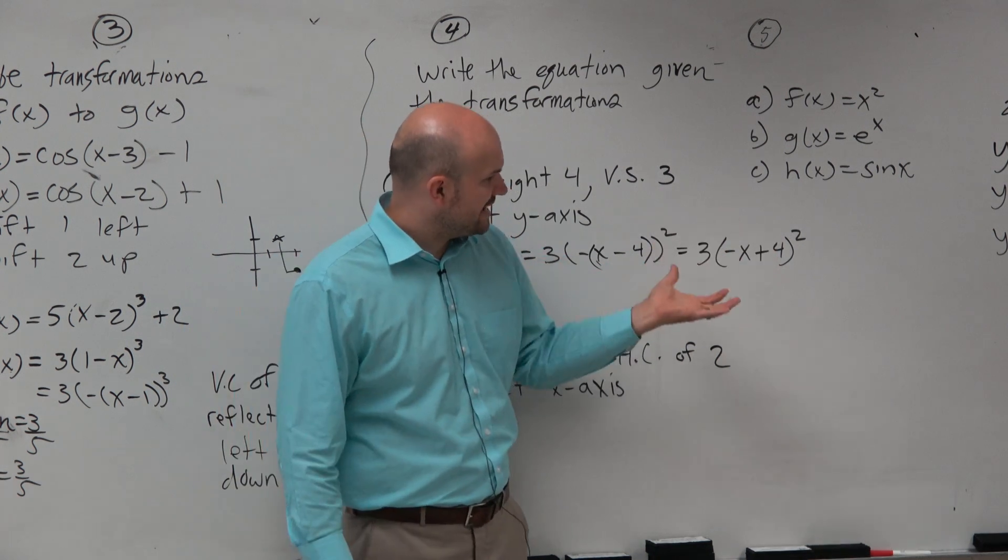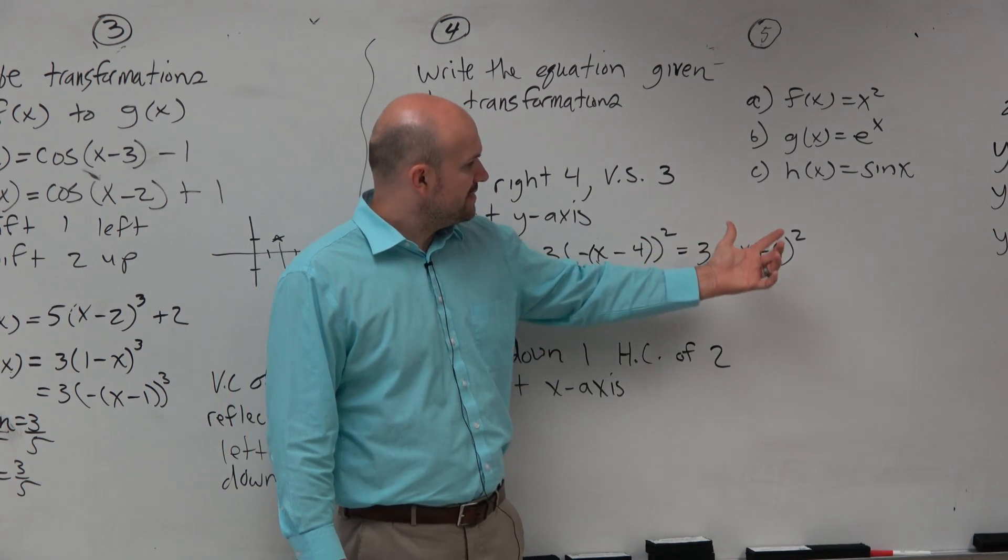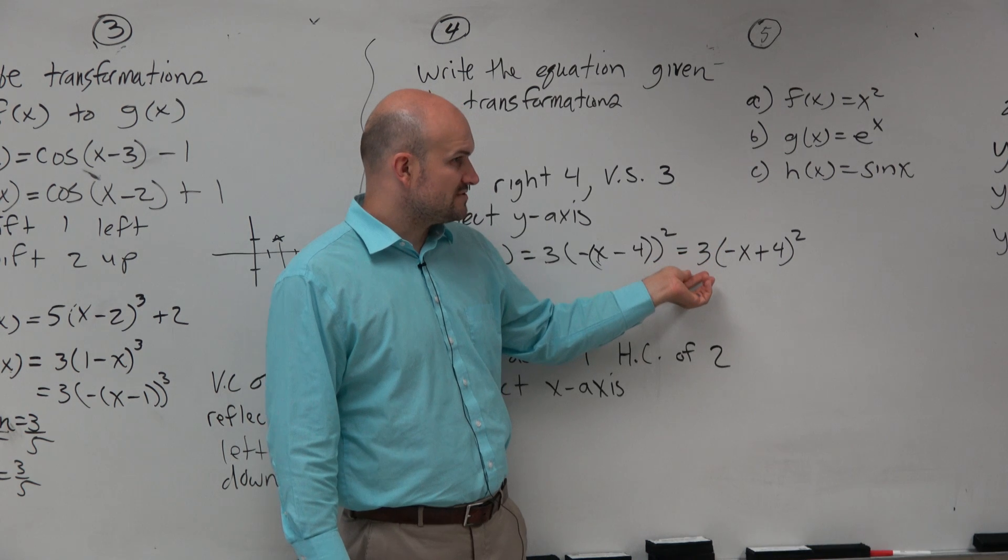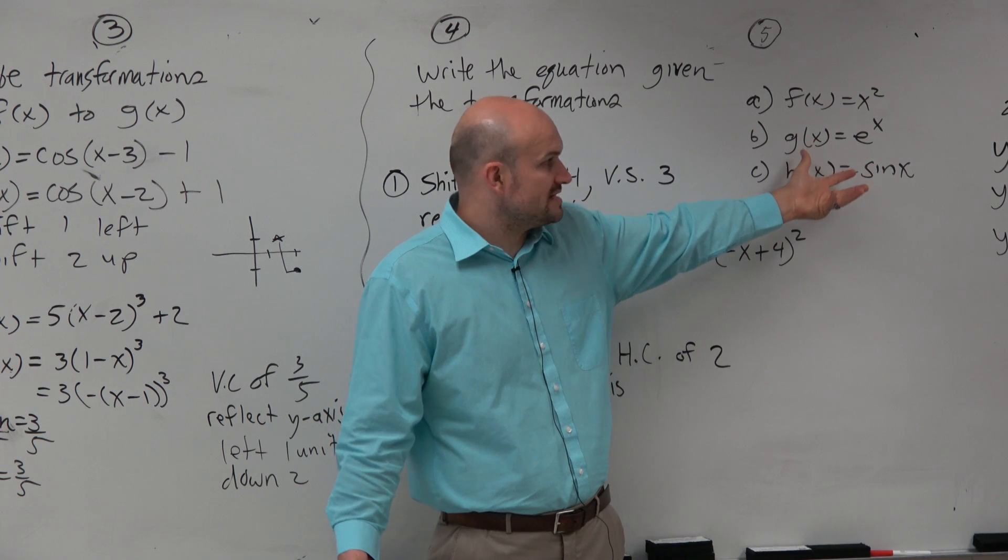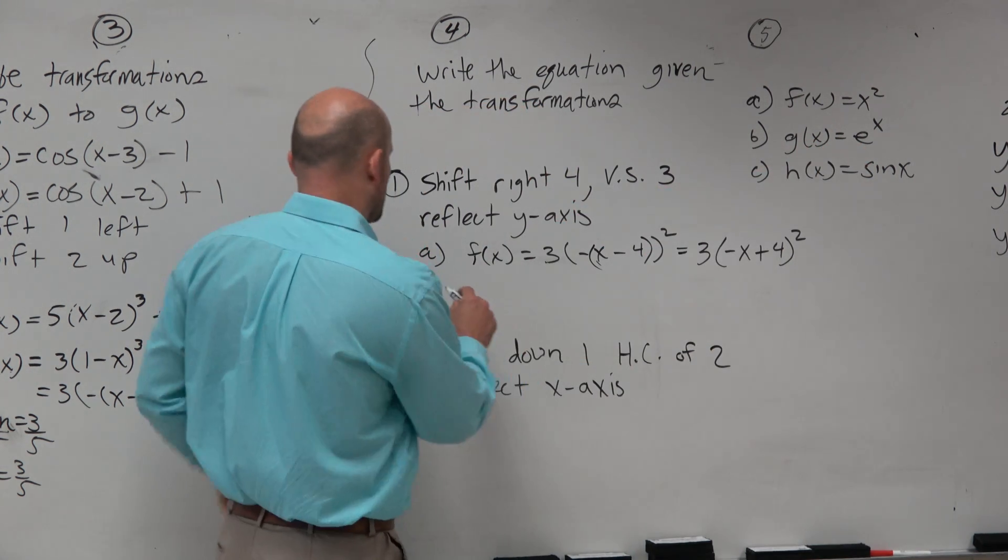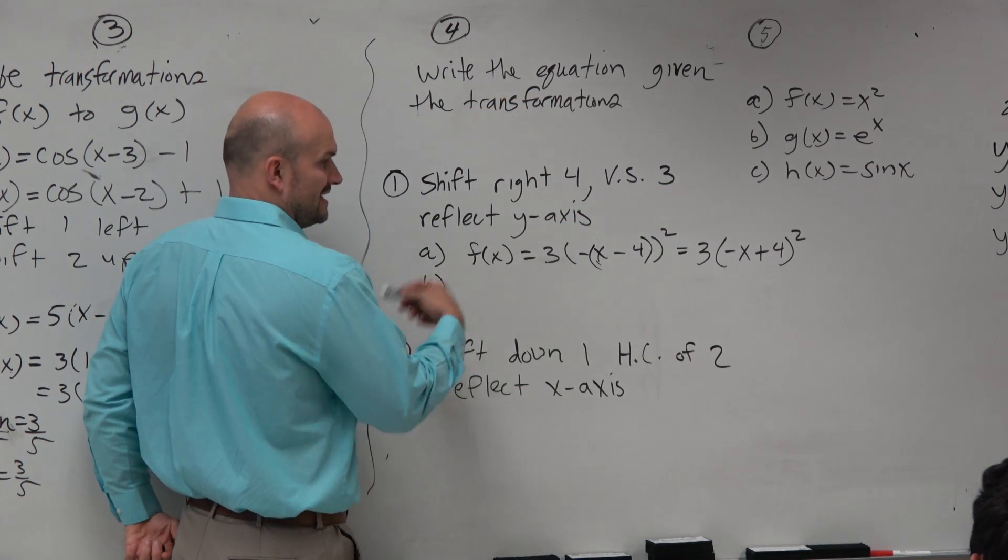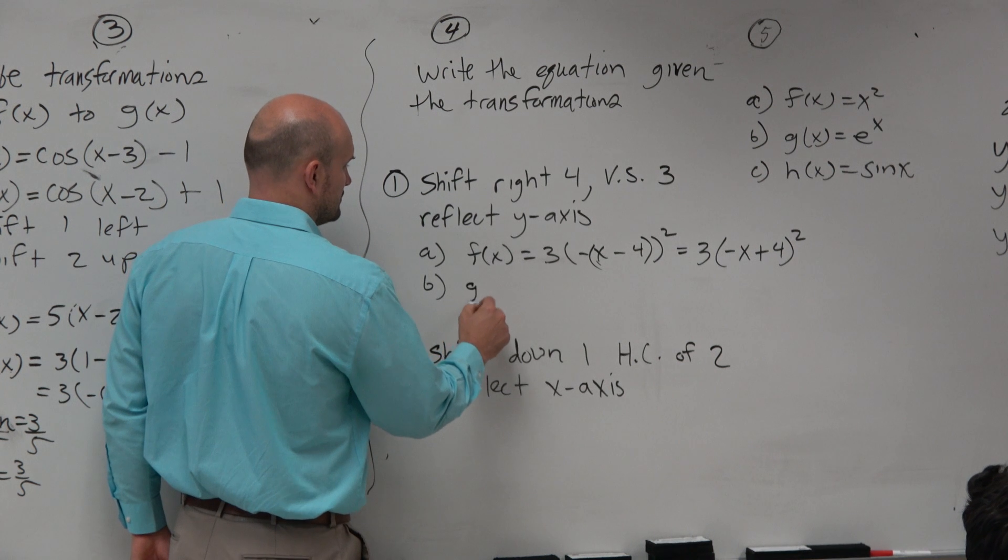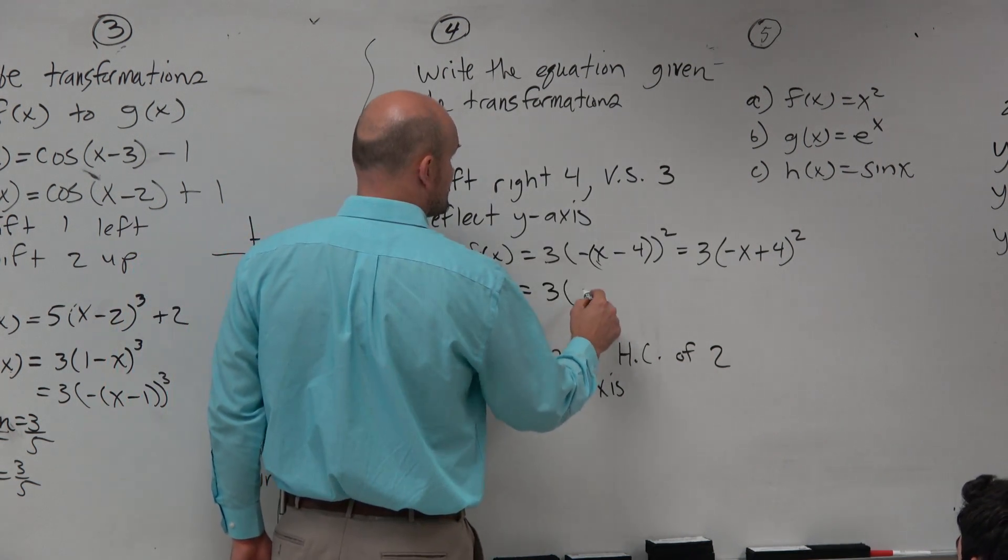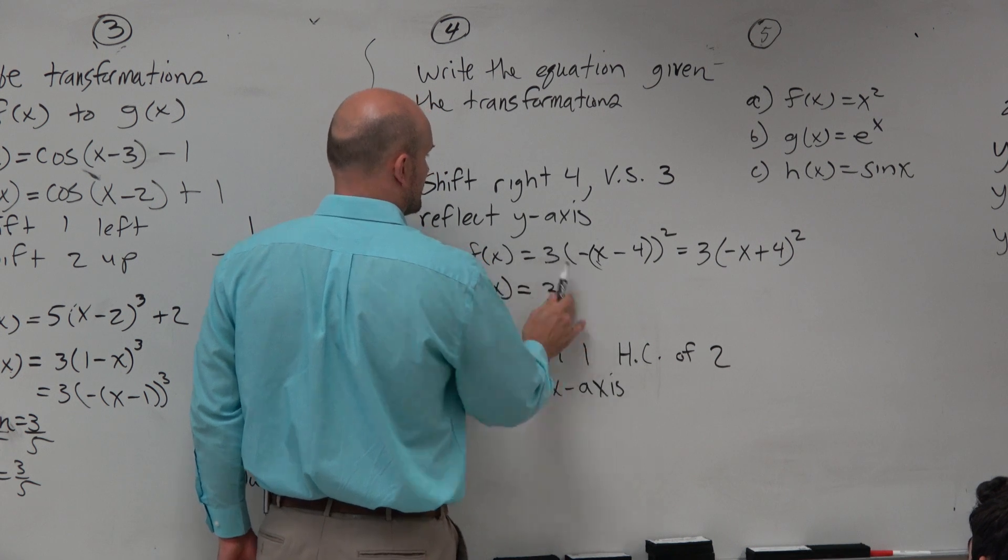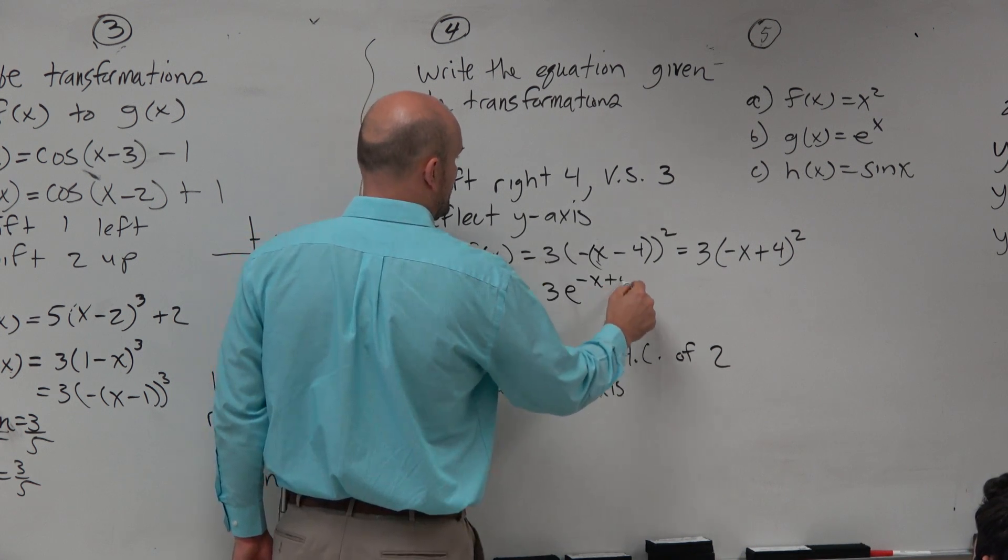And now the nice thing is I understand what's nice about this is this is what's inside my function. This is what's outside. So now, if I want to do these other two functions, I just need to really know where's inside, where's outside. So for the exponential function, inside is really the power. So therefore, I can write this as 3 times e to the negative x plus 4.